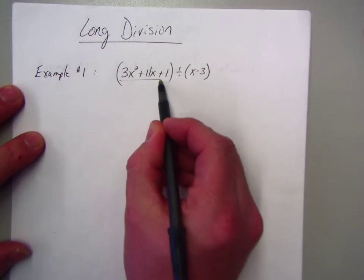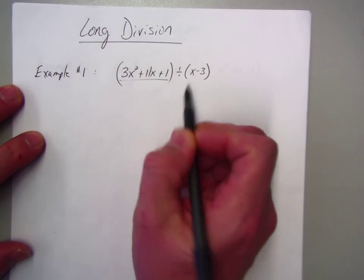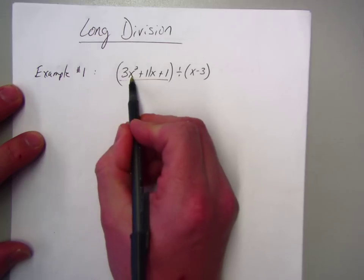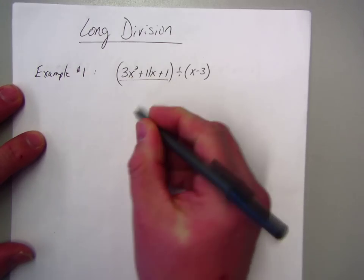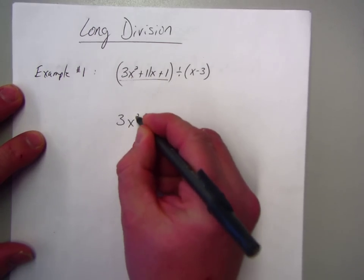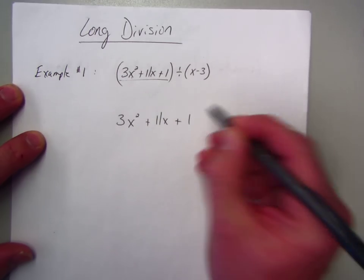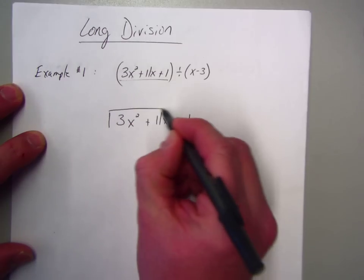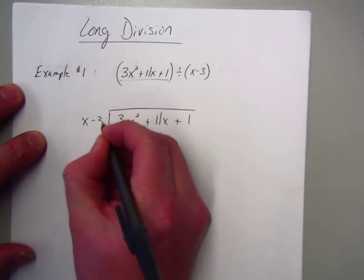So you're going to make sure this part here is in standard form, and you're going to put any missing terms with a zero, since it's a quadratic, and you should have a linear and constant. We're not missing any terms, so I can just go ahead and put it just like it looks. I'm going to divide it by x minus 3.